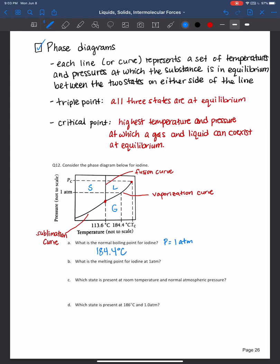Now the next question is asking us, well, what's the melting point for iodine at one atmosphere? So which curve are we going to intersect here? Yes, the fusion curve. So we're going to go here, intersect at one atmosphere, fusion curve, and go all the way down. That's 113.6 degrees Celsius.